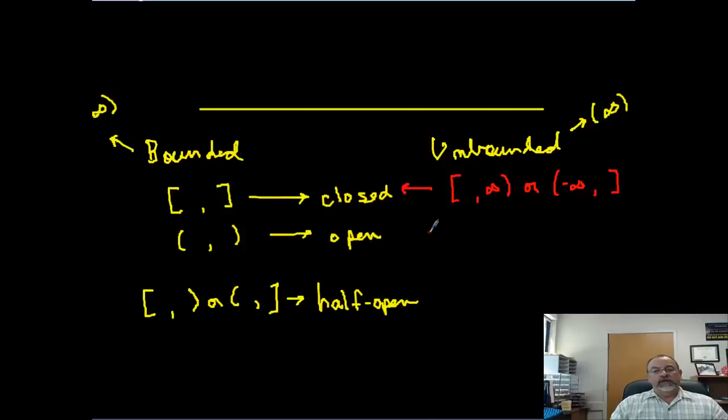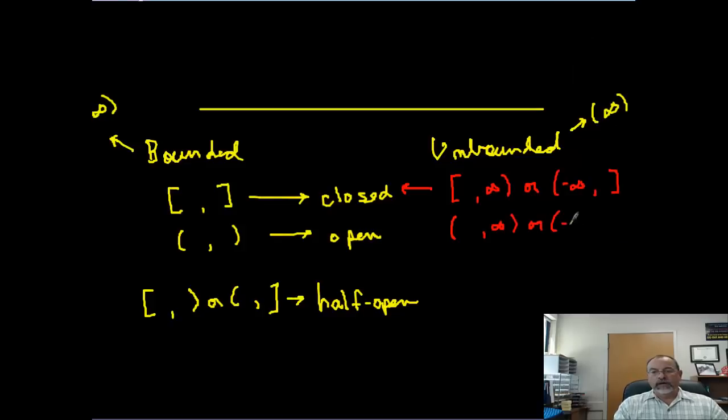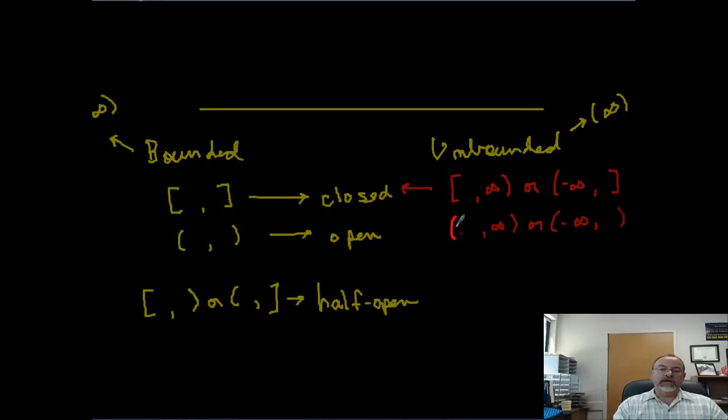The other one happens to be if this number over here is not included, along with infinity. Or, again, if you switch the order. Or if you have this, and this other number's not included, notice both of this symbol and this symbol are not included, so this would be considered open.